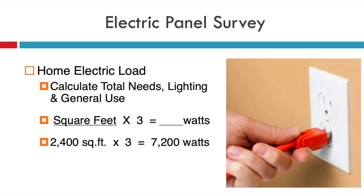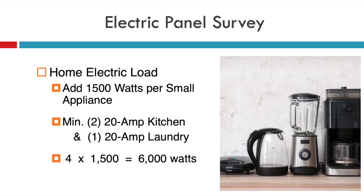That will give you the starting watts needed for just lighting and general use of the building. Then in step two, you have to look at the small appliance load. At minimum, as part of the National Electrical Code, you need to have two small appliance circuits in the kitchen and one small appliance circuit in the laundry room. So at minimum, three 20-amp circuits. Most homes have at least three, probably four or more, and I'm just going to use my house as an example.